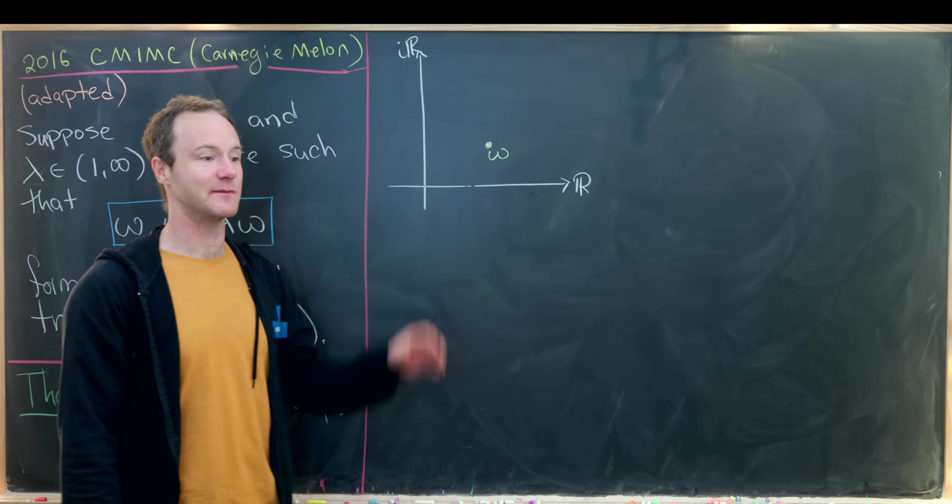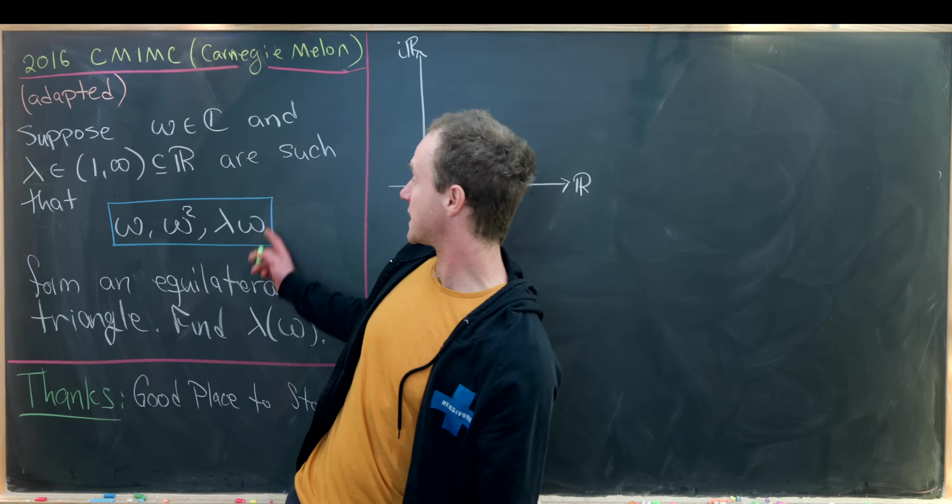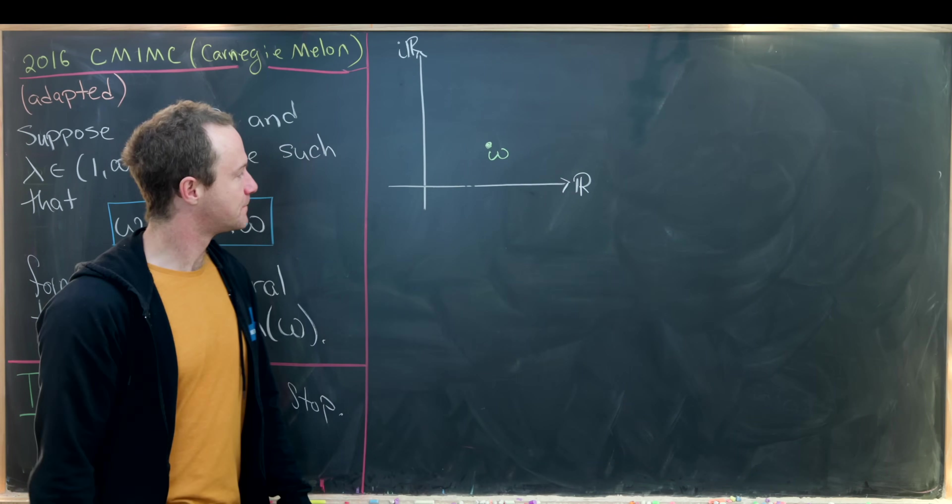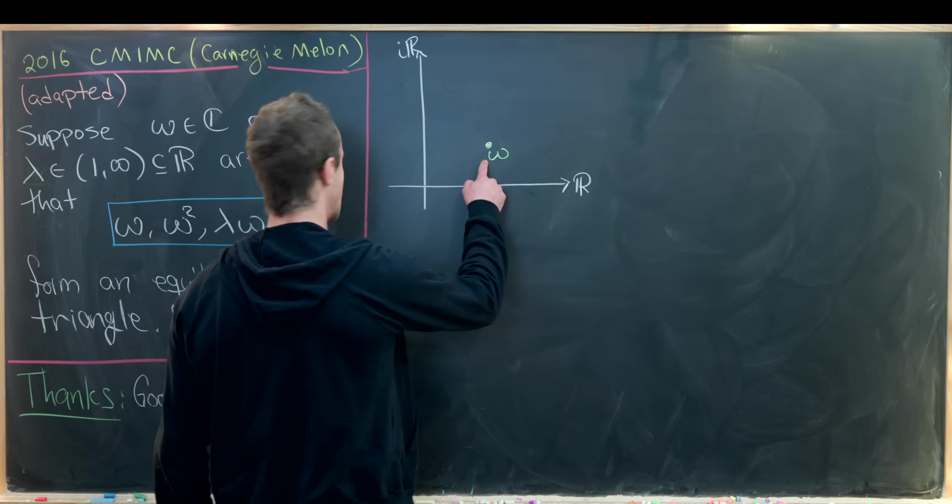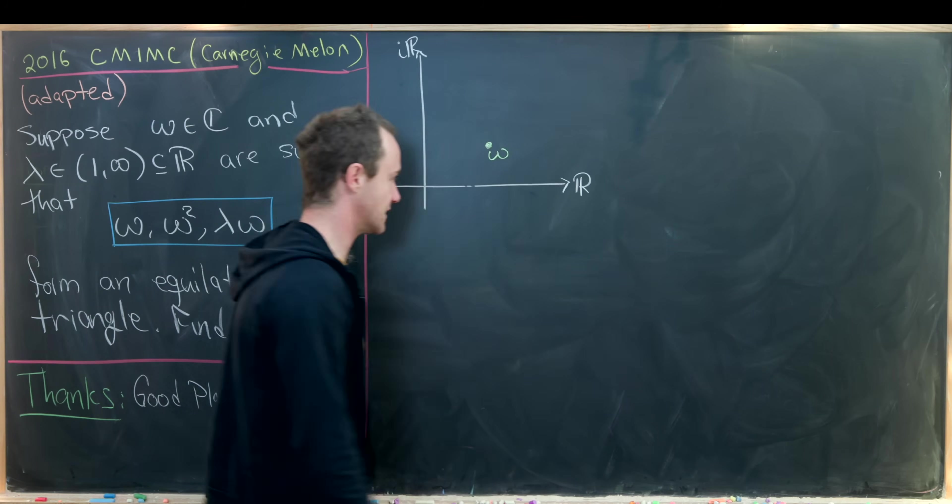Remember, this is just to get us thinking about some maybe algebraic properties that are the relation between lambda and omega. Okay, so now that we've got omega, let's write down one of these other numbers in the complex plane.